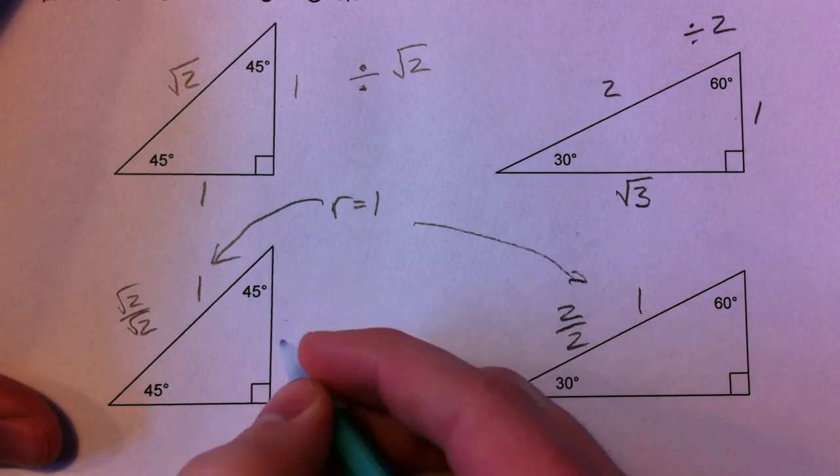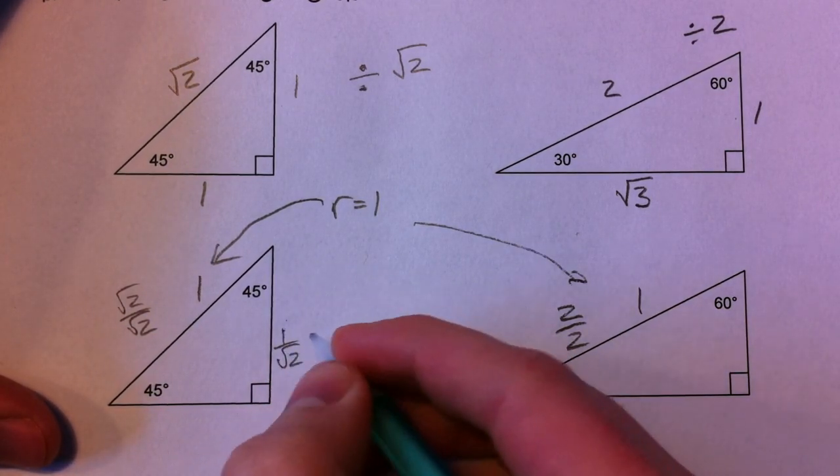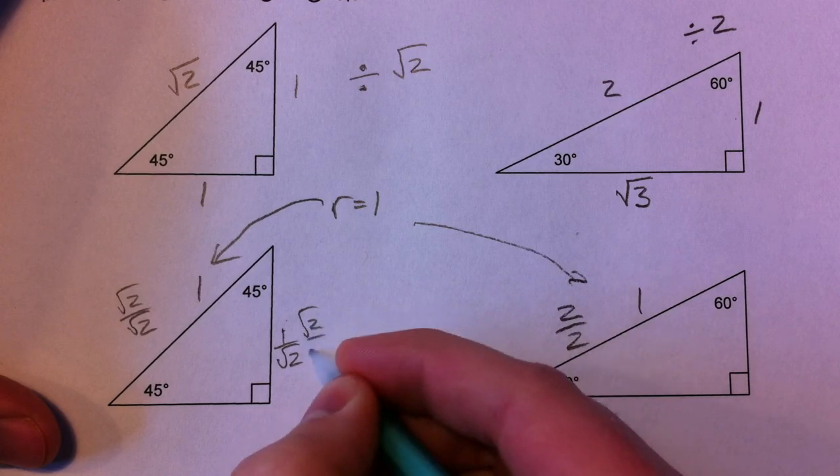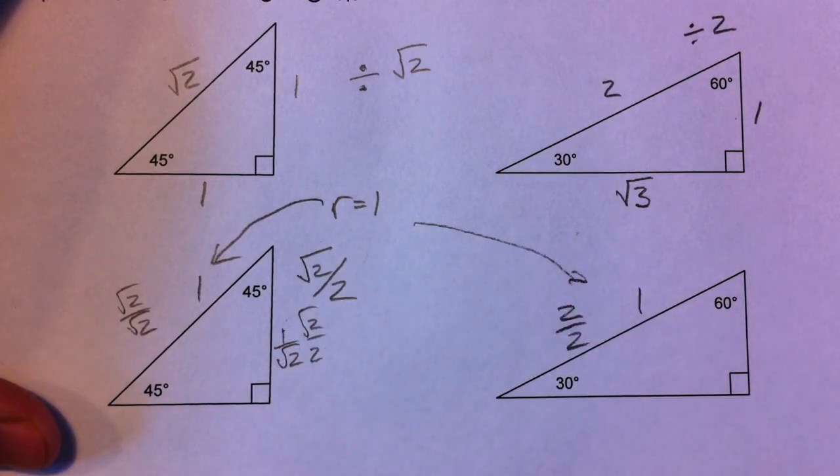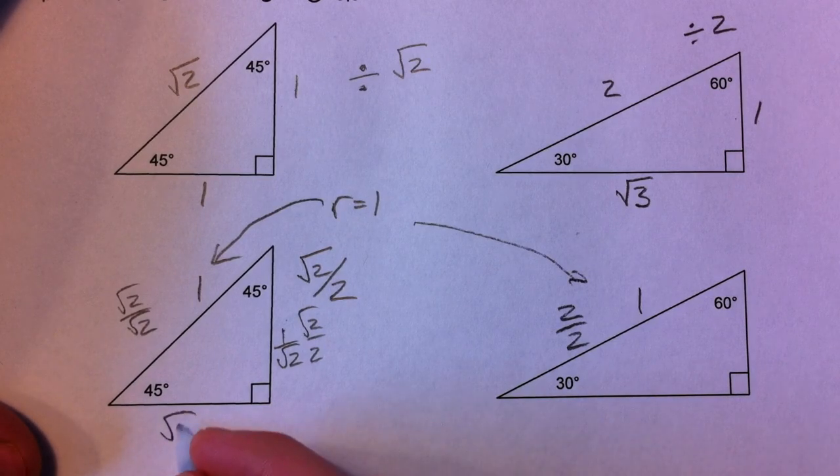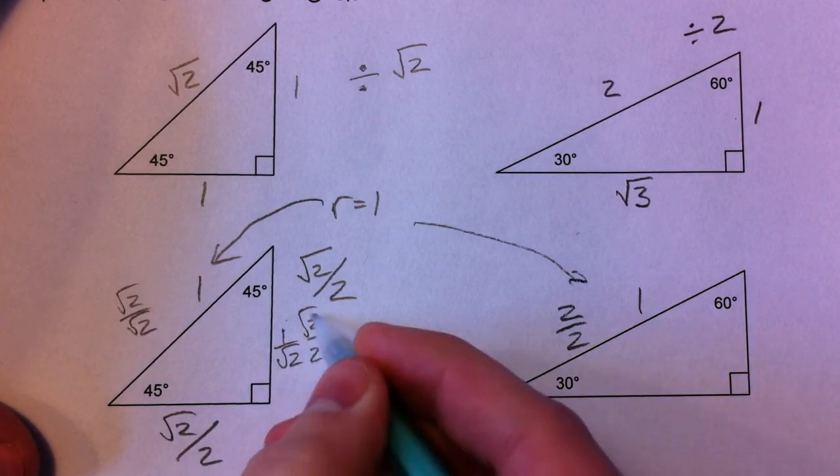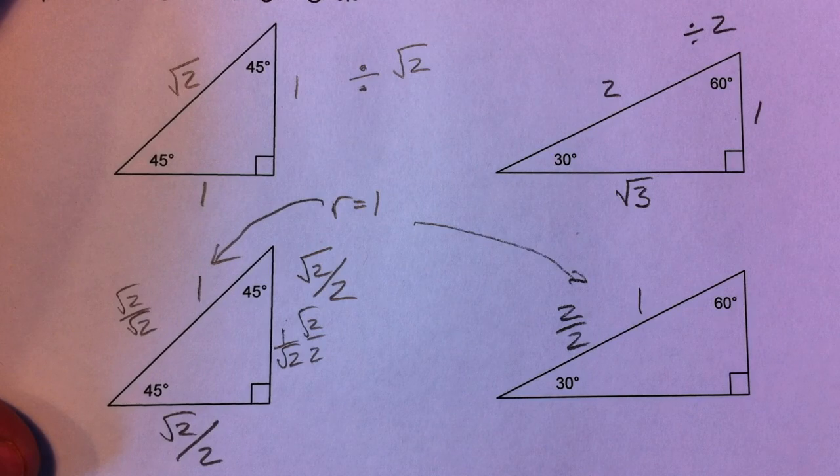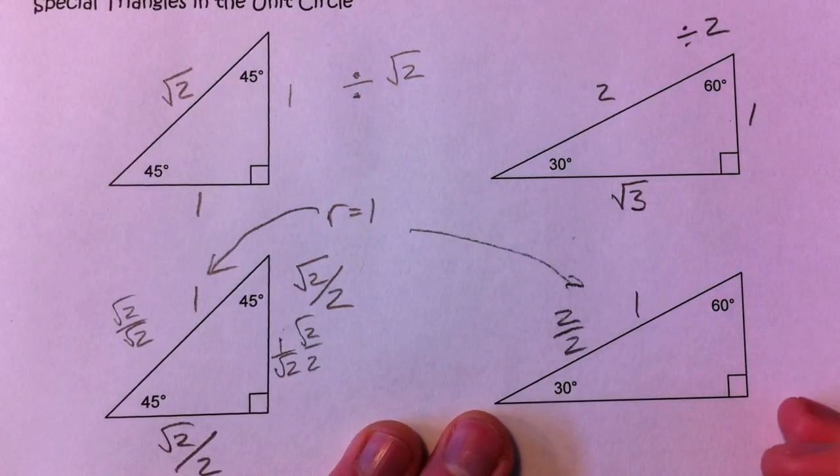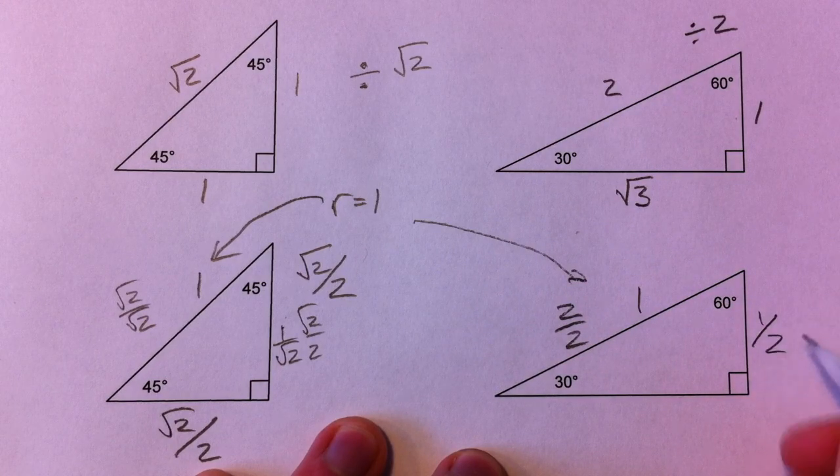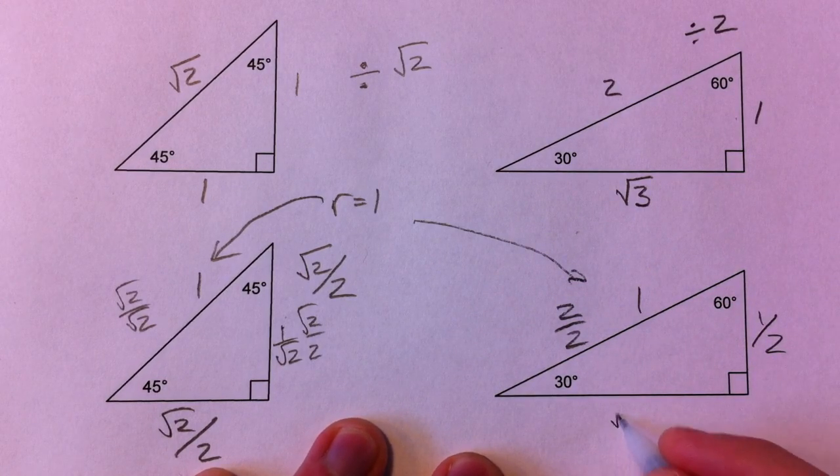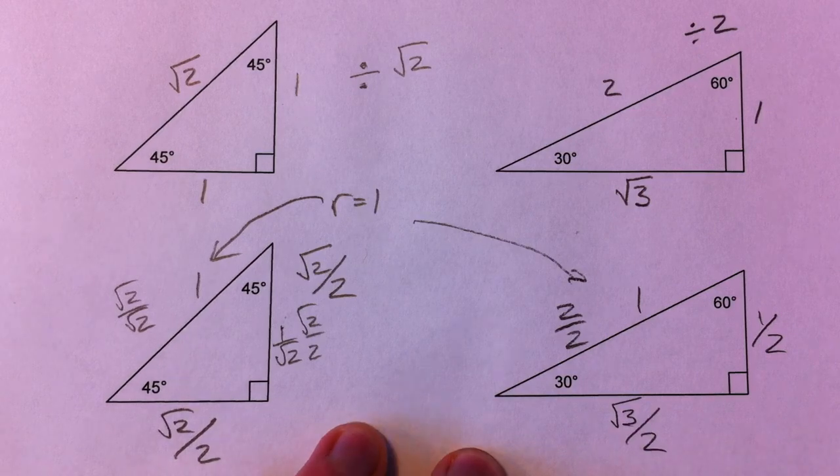So 1 divided by the square root of 2, we multiply, we get root 2 over 2. Same deal here. Root 2 over 2 after we rationalize. And when we divide by 2 here, we get 1 half, 1 divided by 2, and square root of 3 divided by 2.